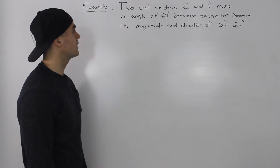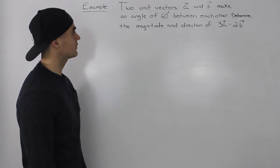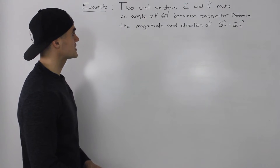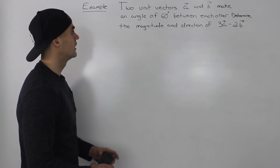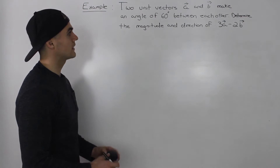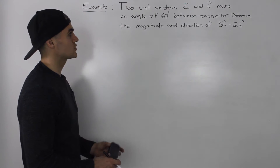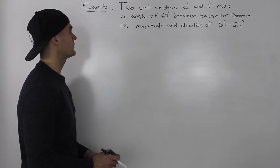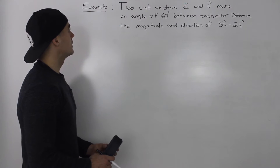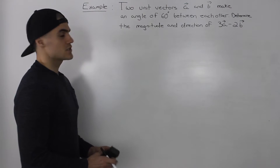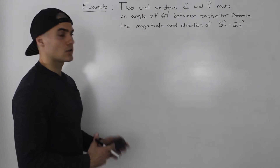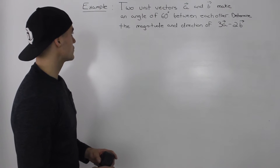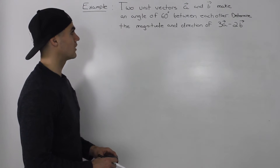We have two unit vectors A and B that make an angle of 60 degrees between each other. Determine the magnitude and direction of 3A minus 2B. This question is going to combine a lot of concepts, so do your best to follow along.